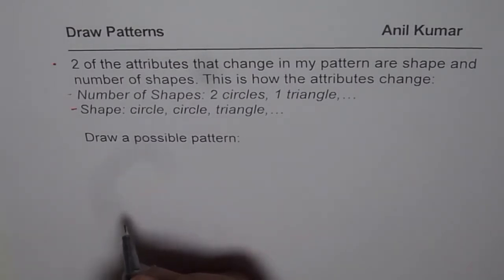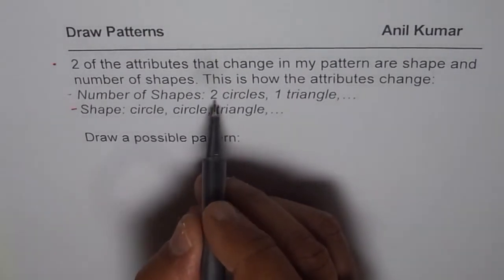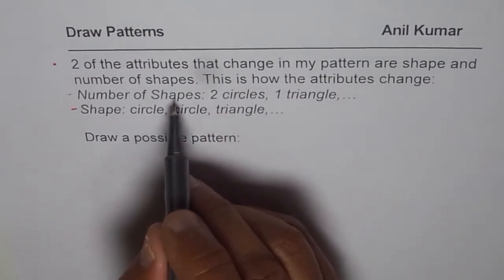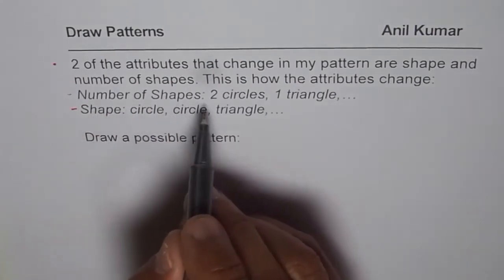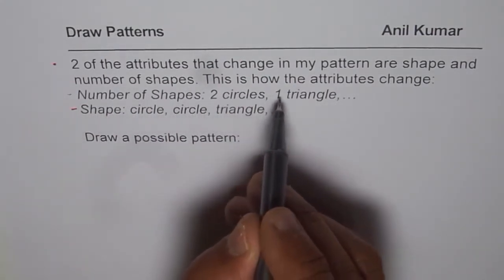Well, the answers could be different. The pattern here has two attributes changing. One is the shape and the other one is the number of shapes. And the description is two circles, one triangle.